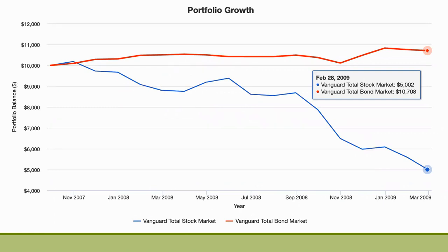This slide shows October 2007 through February 2009 — the global financial crisis. Here again, the red line is bonds, which held their value pretty much, and the blue line is the U.S. stock market, which lost about half its value. That's the nature of being a stock investor — there are periods like this you just have to be ready and willing to accept. People refer to it as the price of admission for stocks. You have to be willing to wait it out so that when the market comes back, your portfolio comes back too.